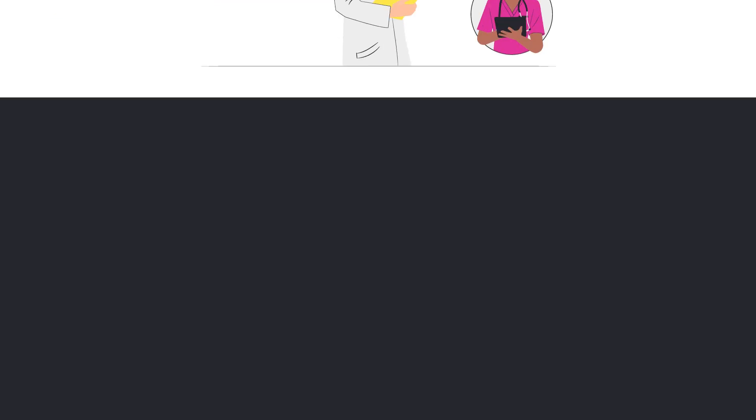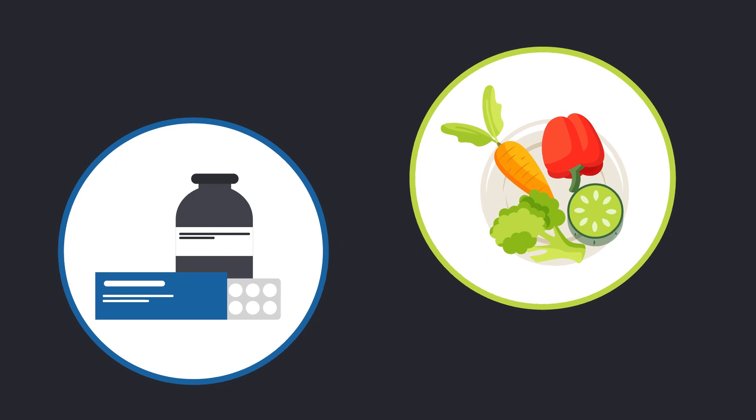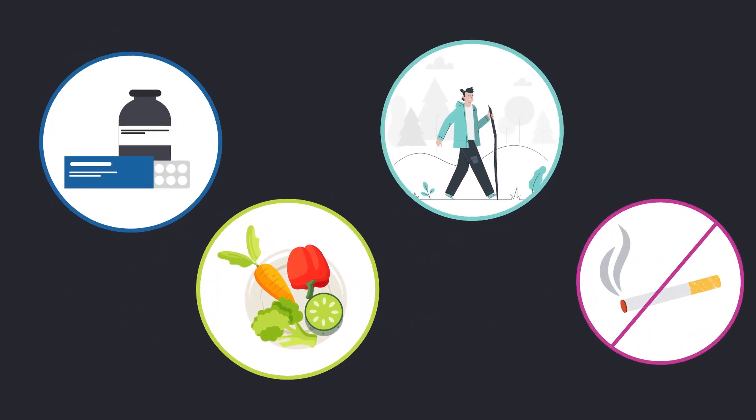People with C3G or ICMPGN can slow the damage to their kidneys with medicines, eating healthy foods, being active, and not smoking.